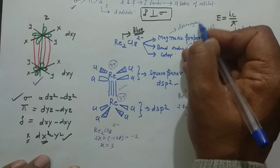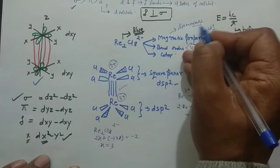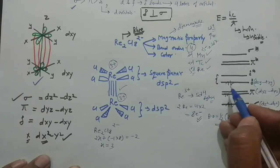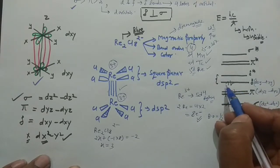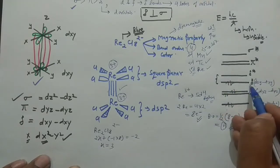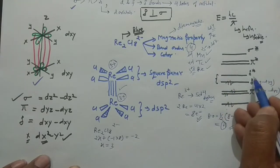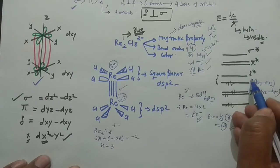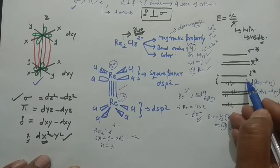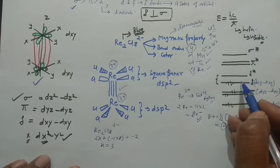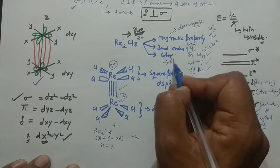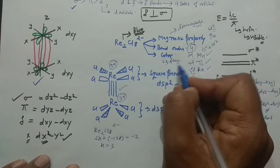The bond order is 4. All electrons are paired in the molecular orbital diagram, so this complex is diamagnetic in nature. Since electrons can be easily promoted from the delta bonding to delta antibonding orbital, the compound is colored — the color of this rhenium complex is blue.